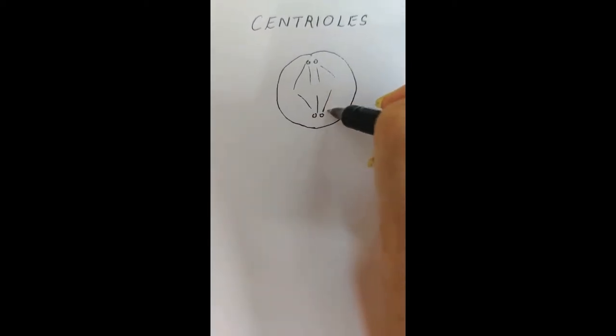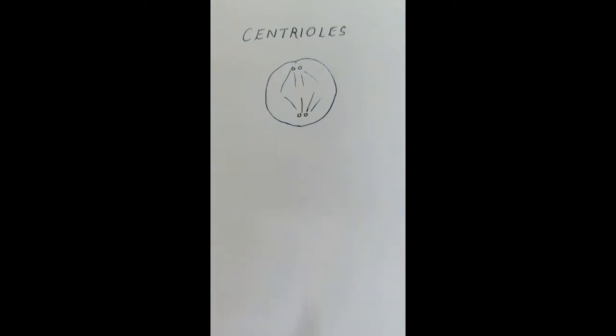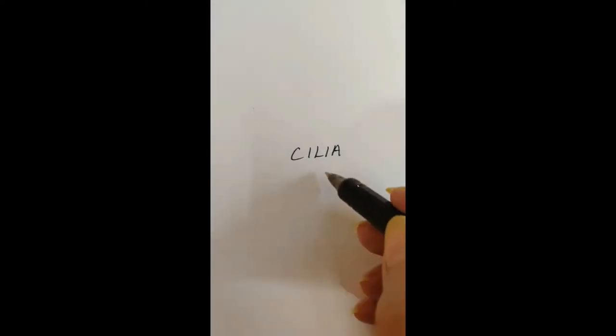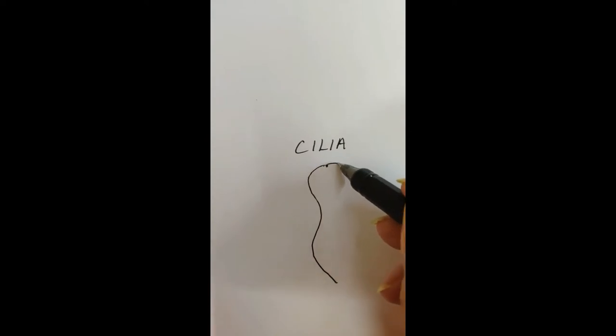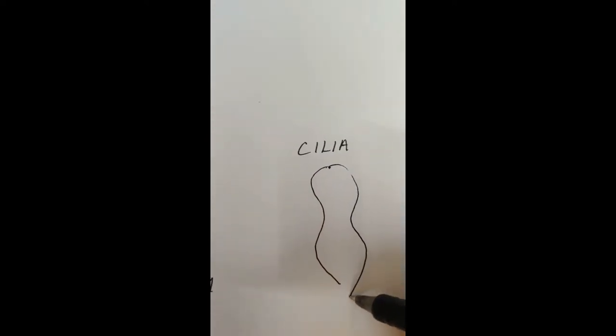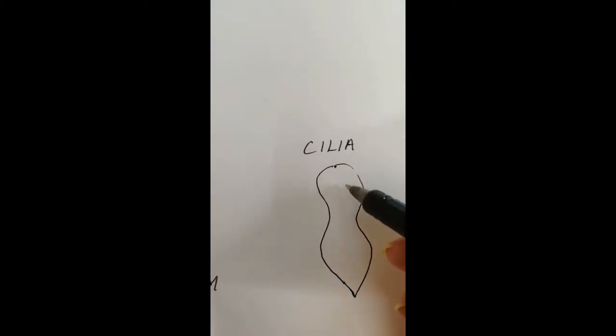The same centrioles are present as basal granules in organisms which have cilia, and at the base of the cilia or the flagellum, the basal granules is nothing but a centriole.